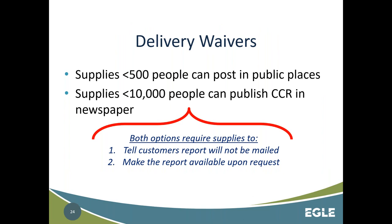If you're a small system, delivery waivers are available. Systems under 500 people have the option to post the CCR in at least one public location, such as at mailboxes or a bulletin board in an office. Systems below 10,000 people may publish the entire CCR in a newspaper — note that you must publish the full CCR, not just a notification directing people online. Either way, with both waiver options, you must tell your customers that the report will not be mailed to them and must make the report available upon request.